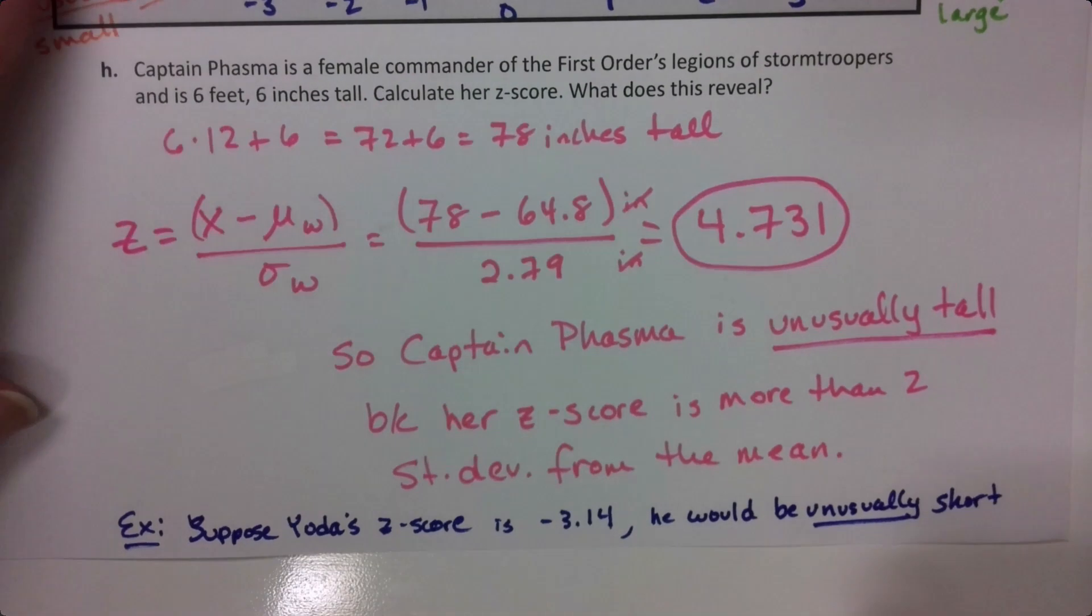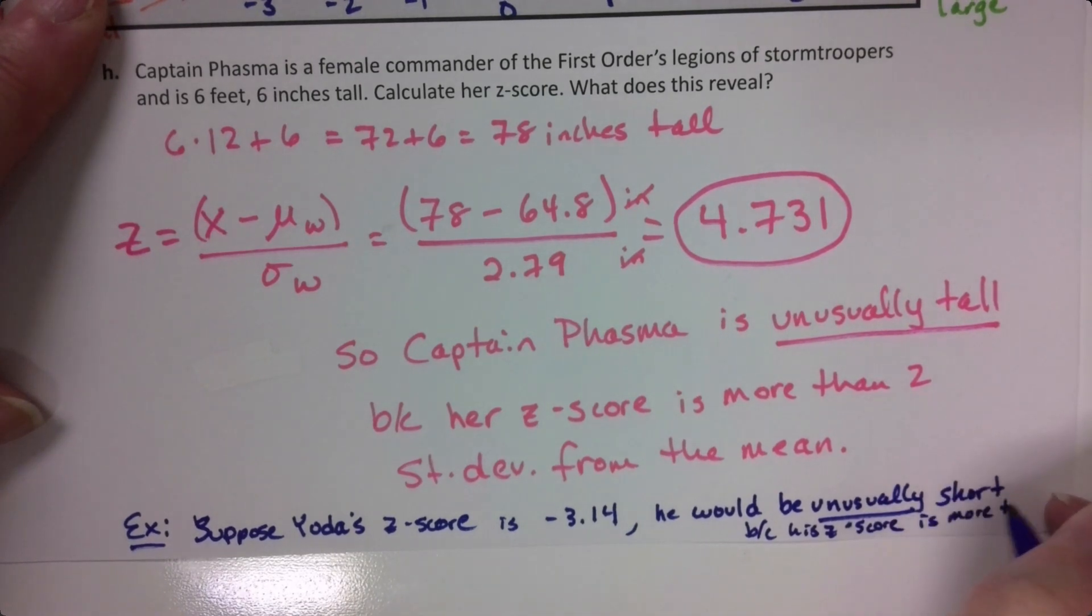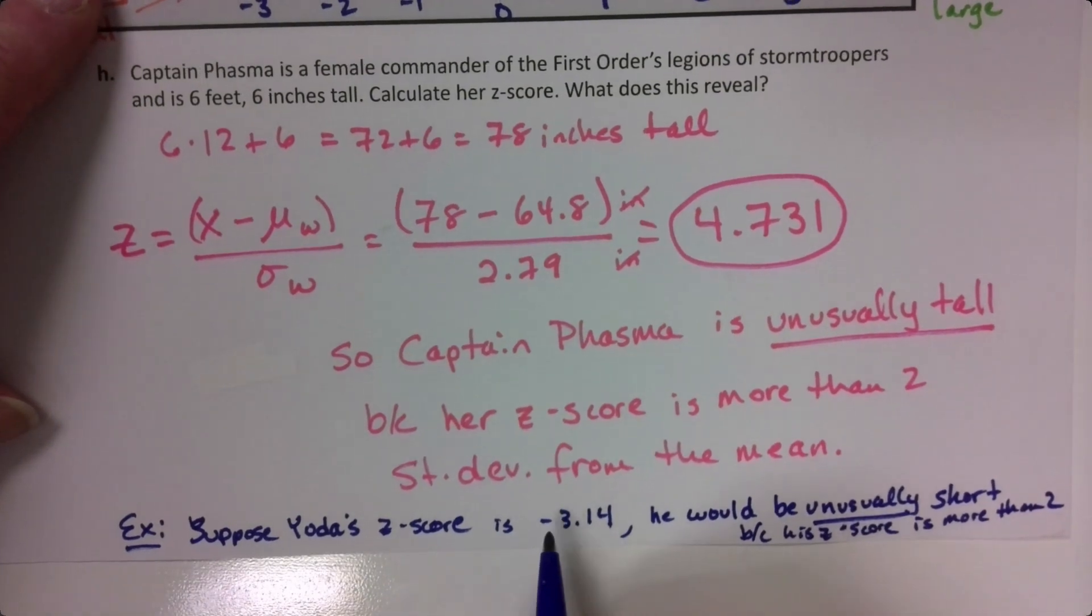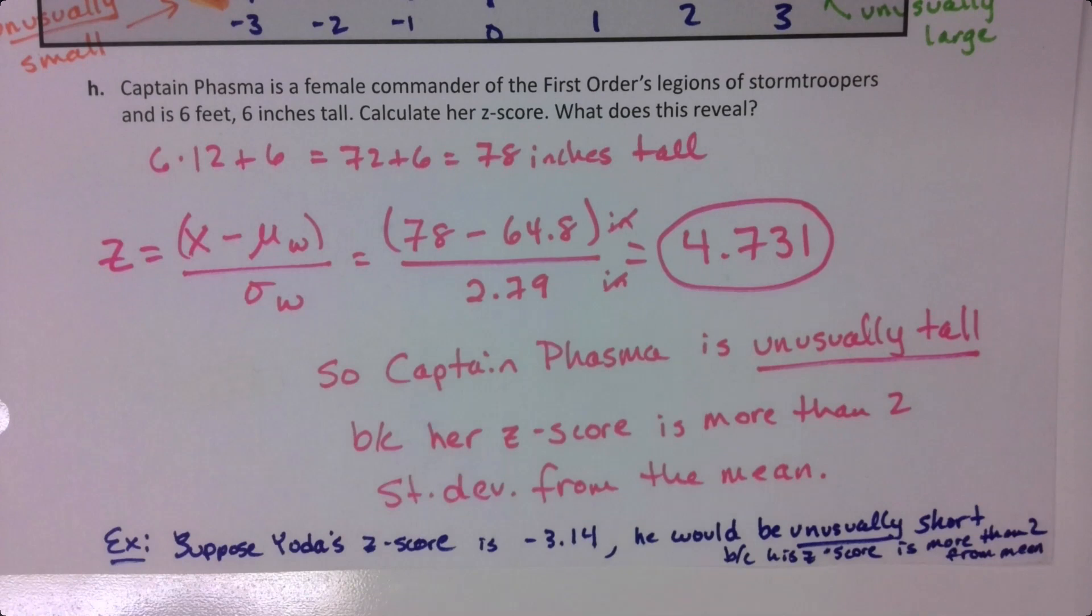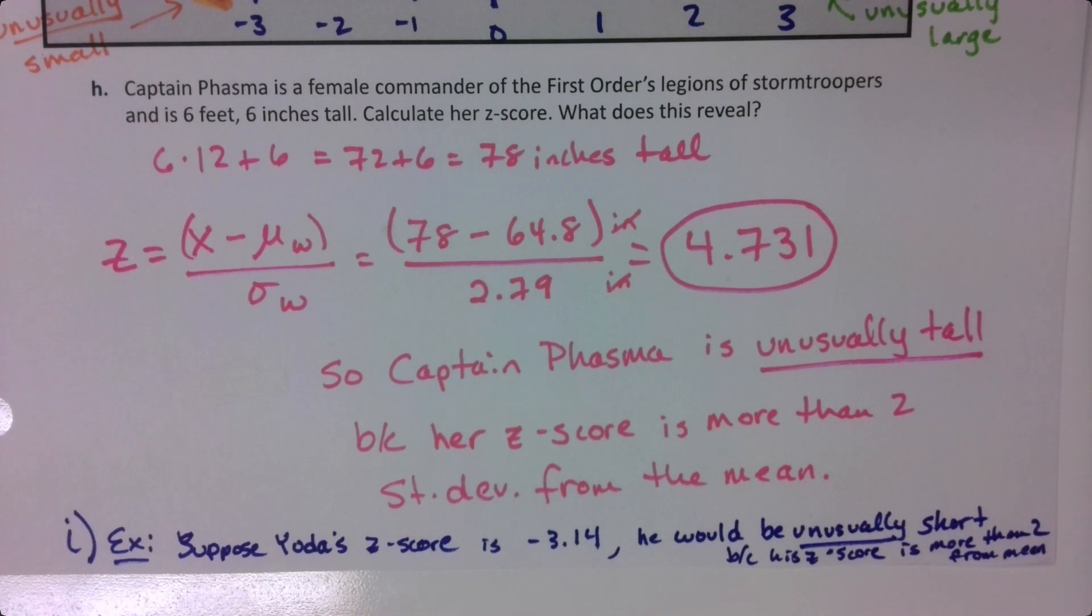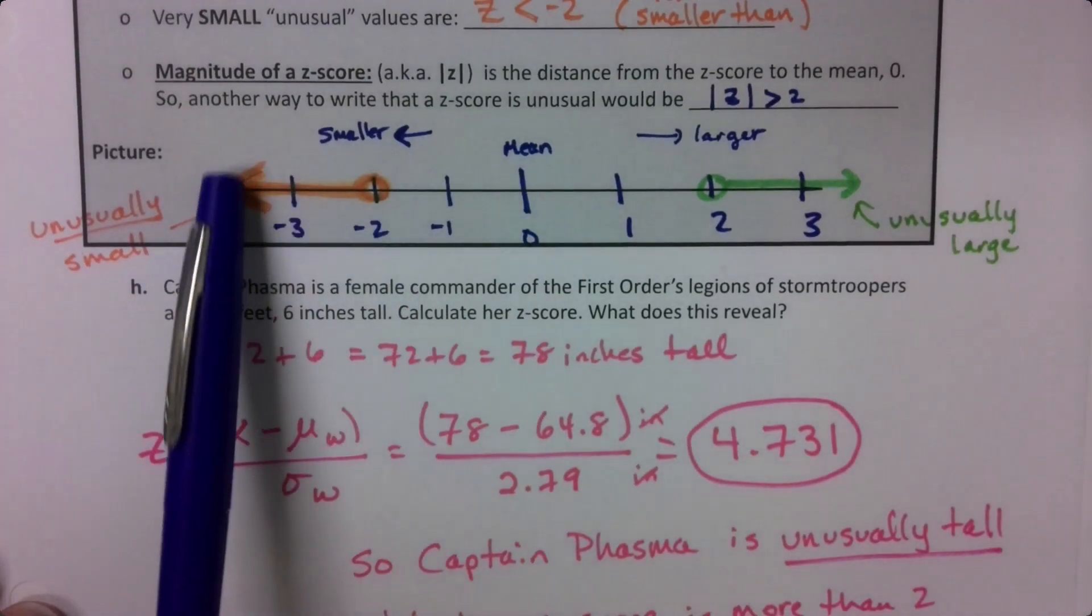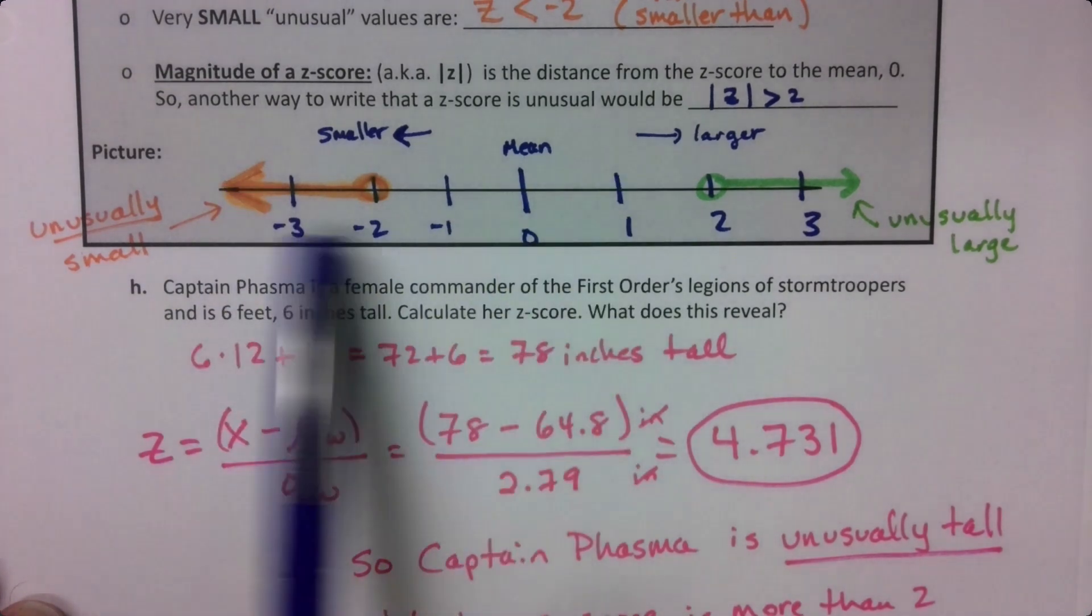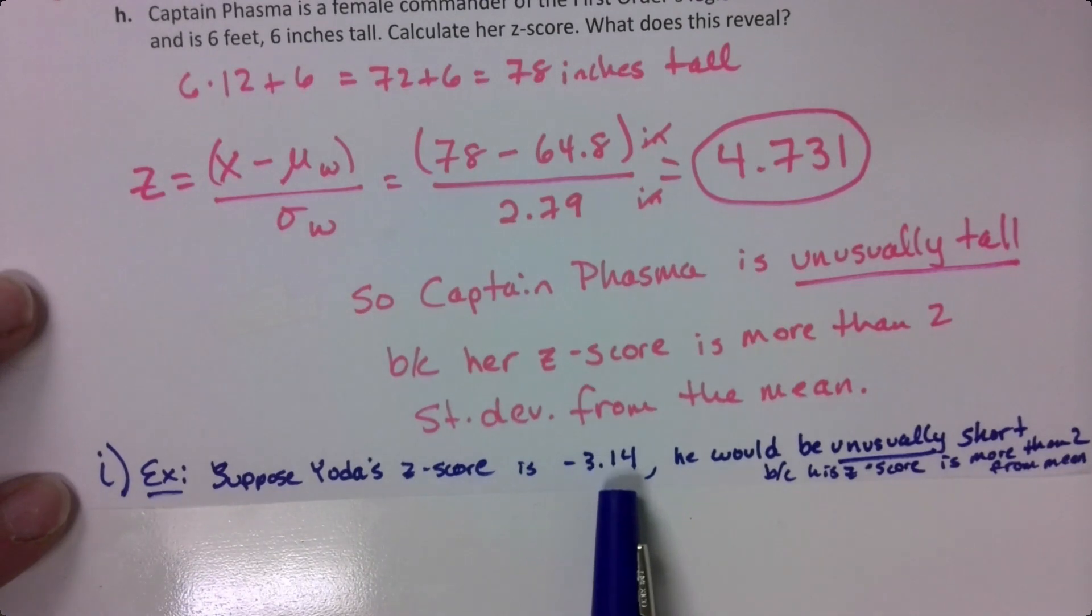Because his z-score is more than two from the mean. It's the absolute value of it. You don't really think about the negative part. You think about the number from the mean. It's really about the size of that number. If his z-score is negative 3.14, the negative doesn't really have anything to do with it. If you're at negative 3, you're over here. The size of that number is more than two. He's more than two standard deviations away from the mean by having a z-score that's that large a number. Negative just means that he's on the left side.